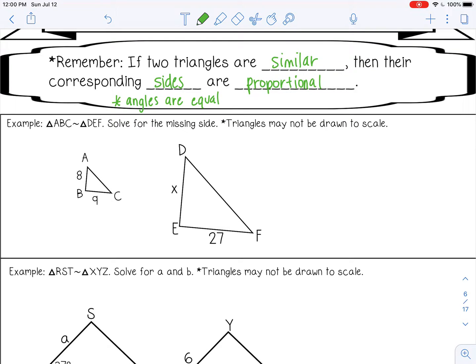So in the first example, triangle ABC is similar to triangle DEF, and we want to solve for the missing side. There's a note that triangles may not be drawn to scale, so they may not look similar, but we know they are based on the similarity statement.